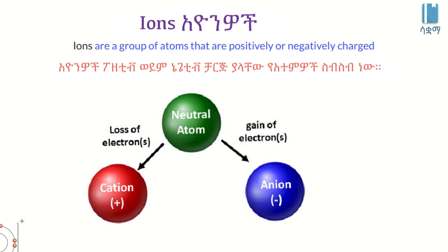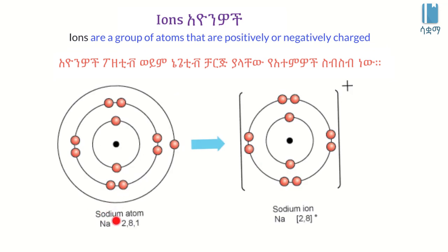The atom that gains more electrons than it loses becomes negatively charged. When the valence electron balance changes, the atom becomes charged. This process — when an atom gains or loses electrons — produces ions: positively charged ones are cations, negatively charged ones are anions.